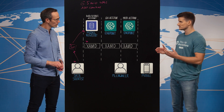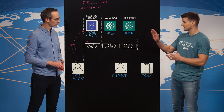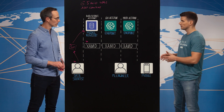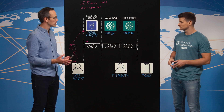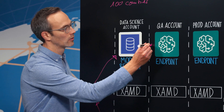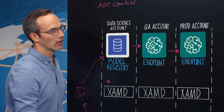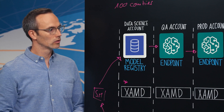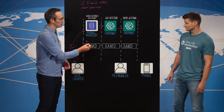The main challenge was productionizing these models across three different accounts: the data science account, the QA account, and the production account. Once we had a validated model, the question was how can we actually deploy such models across the different accounts — from data science to QA to a production account for Scouting? We wanted a reliable mechanism to do the cross-account model deployment, and that's where we ended up developing EXAMT.